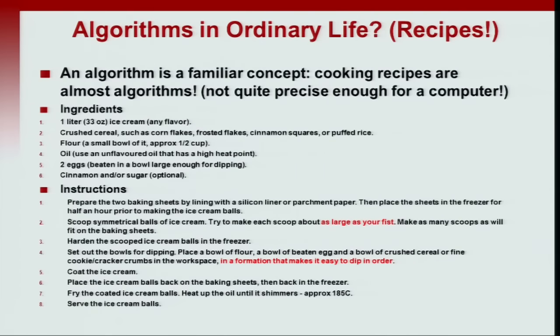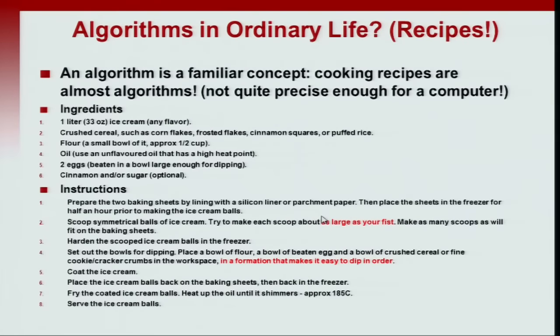Even so, you will see that certain recipes are fairly vague and other recipes are fairly detailed. In any recipe, you can see certain things which are vague and will cause confusion to most people. For example, here is a term which says try to make each scoop about as large as your fist. That is a vague term because my fist could be a different size than yours. Then you will see that in a formation that makes it easy to dip in order, this is fairly vague and it is not very helpful to a cook who is making this for the first time.